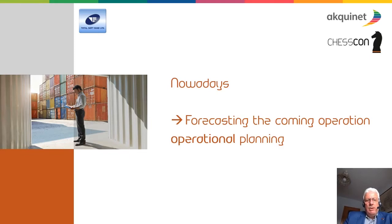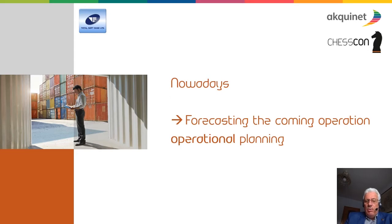So to summarize the planning levels: we had strategic planning for layout and design of a terminal, tactical planning for the strategies to be used, and now we are going to operational planning by forecasting the coming operation with simulation.